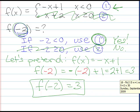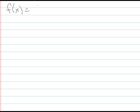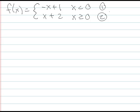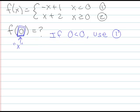Let's do one more example with the same function: f of x equals negative x plus one for x less than zero, and x plus two for x greater than or equal to zero. Now let's find f of zero. This is where it gets a little funky because we're right at the transition point. Notice that condition one only works when x is strictly less than zero.